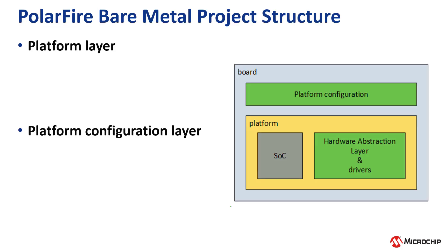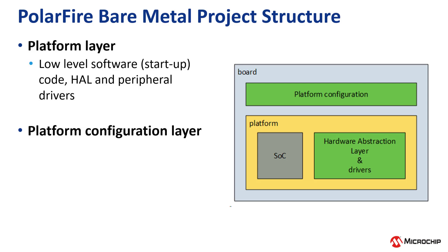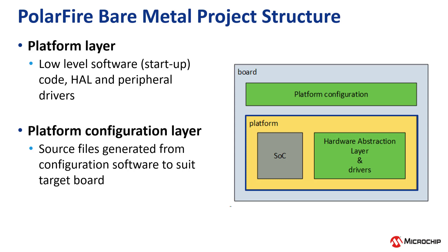In a PolarFire SoC Bare Metal Project, there is the Platform layer and the Platform Configuration layer. The Platform layer contains low-level software, which consists of the Startup Code, the Hardware Abstraction layer, and the Peripheral Drivers. In the Platform Configuration layer, there are the source files that are generated from the MSS XML document by configuration software to suit the target board.